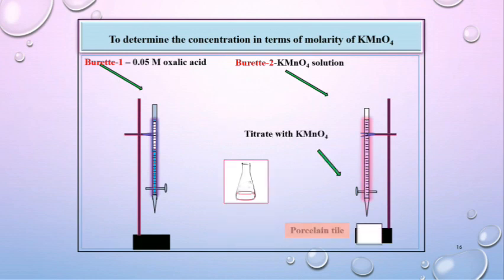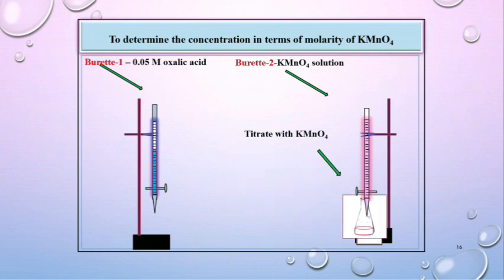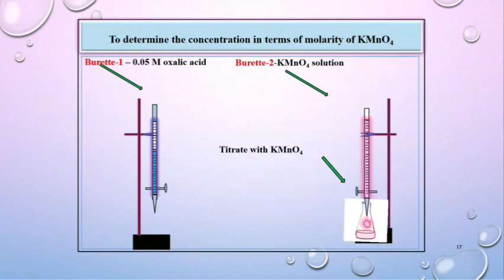Now keep the tile and then titrate this solution with this burette number 2 with constant stirring till faint pink color appear to the solution and record this reading as pilot reading in the observation table.